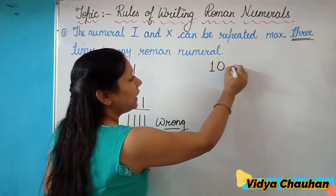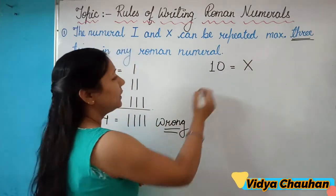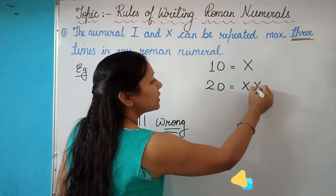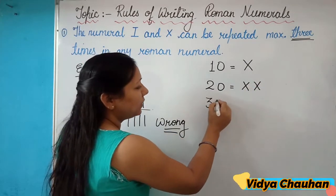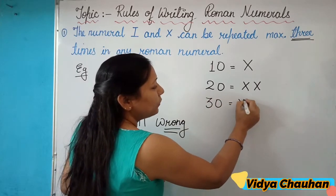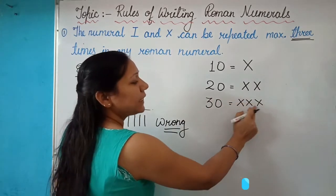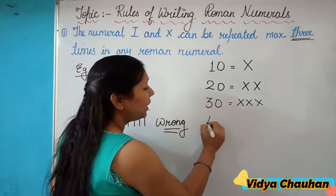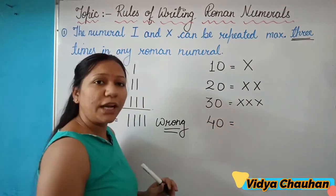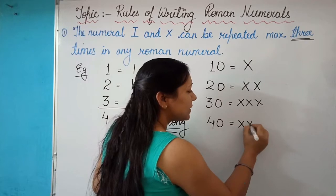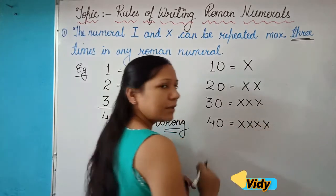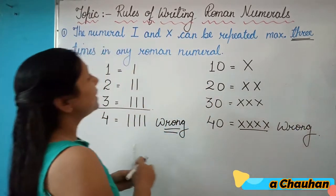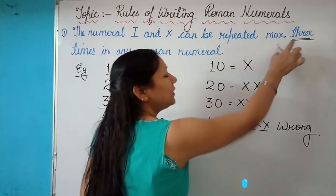Similarly, for writing 10 we use the symbol X. For writing 20 we write XX — two times X. If we have to write 30 we can repeat X three times — XXX — which represents the Hindu-Arabic number 30. Now if we have to write 40 as XXXX, it is wrong because our rule says we can only repeat it three times.